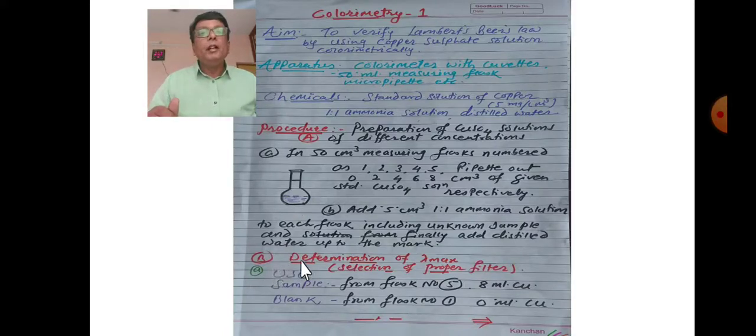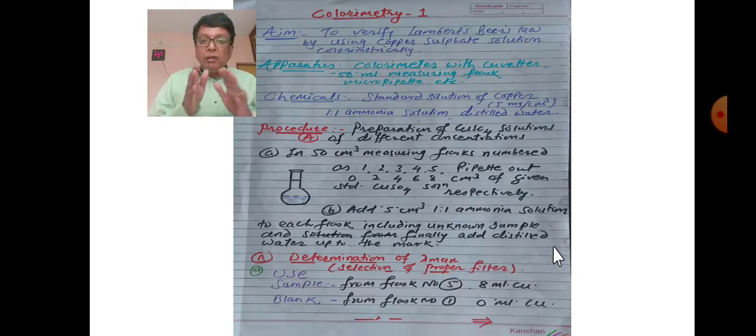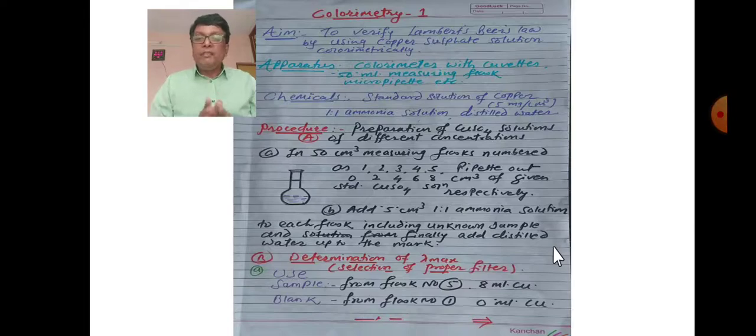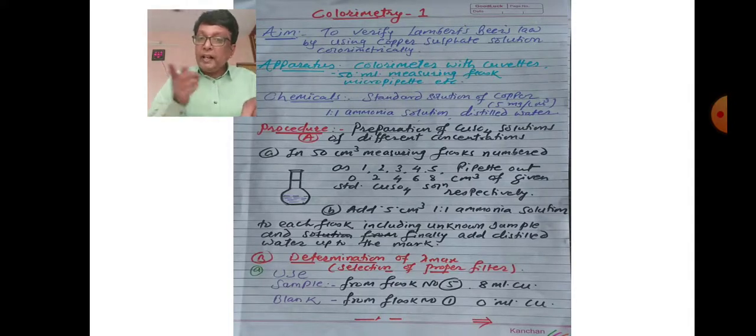Part 2: Determination of lambda max. Lambda max is the maximum wavelength or selection of proper filter. The filter allows light of a particular wavelength to pass through. We need to find which wavelength gives maximum absorbance. Use the sample from flask number five, which has 8 ml copper.